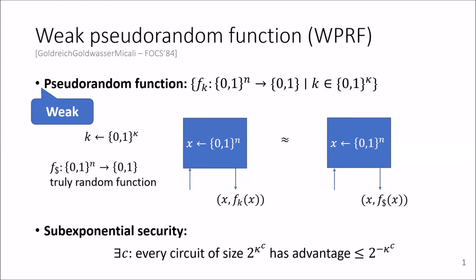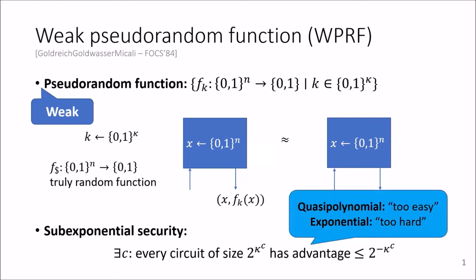And the security notion we consider here is sub-exponential security, so security against circuits of sub-exponential size that have 1 over sub-exponential advantage. And why is that the security notion we aim for?